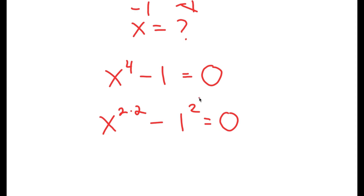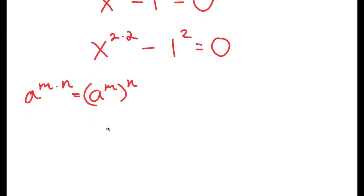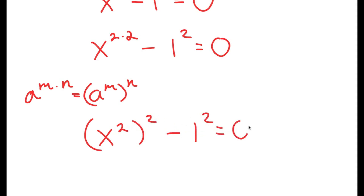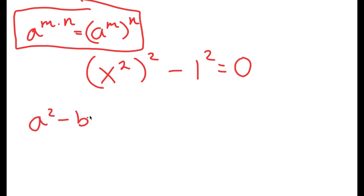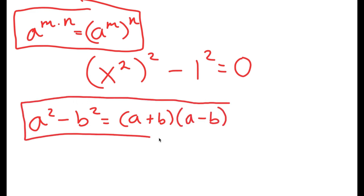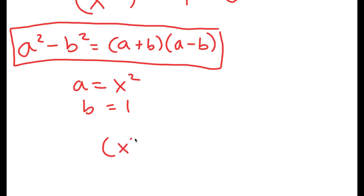I'm going to rewrite this as x to the power of 2 times 2 minus 1 to the power of 2 equals 0. Using the property a to the power of m times n equals a to the power of m to the power of n, x to the power of 2 times 2 becomes x squared to the power of 2. Then using the difference of squares property a squared minus b squared equals (a+b)(a−b), where a is x squared and b is 1, I get x squared plus 1 times x squared minus 1 equals 0.